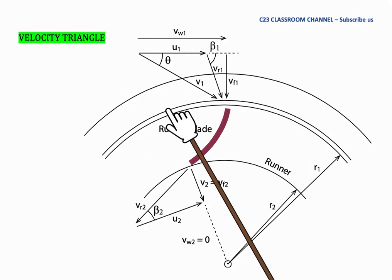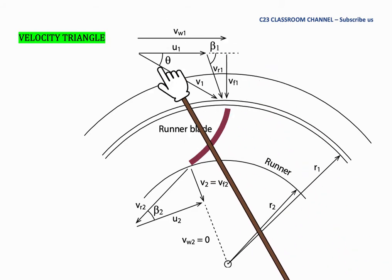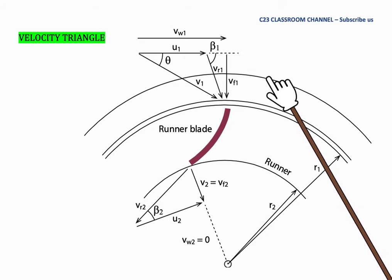One thing you should know is that Francis turbines are actually the reverse of centrifugal pumps. It means that if you want to calculate or draw the velocity triangle for Francis turbines, you need to reverse all the velocity triangles of centrifugal pumps.